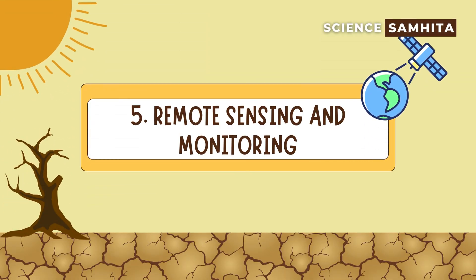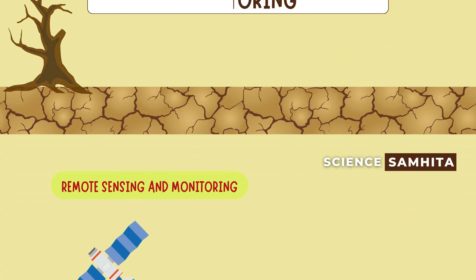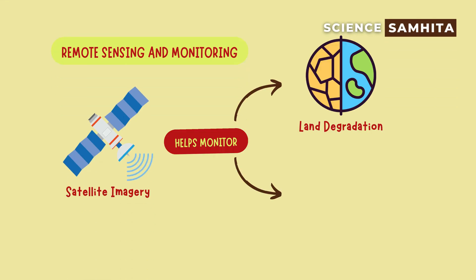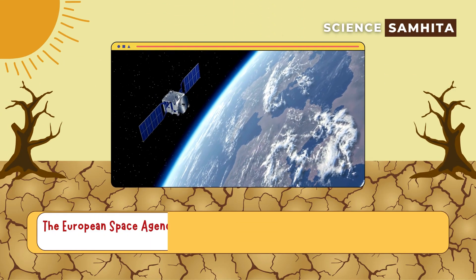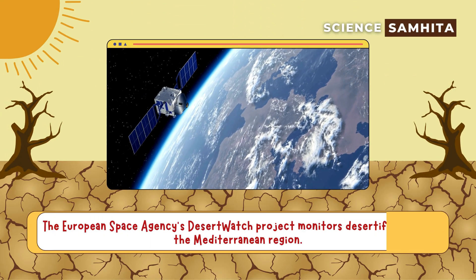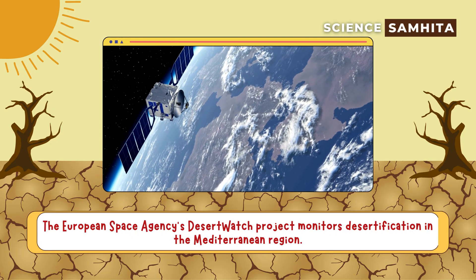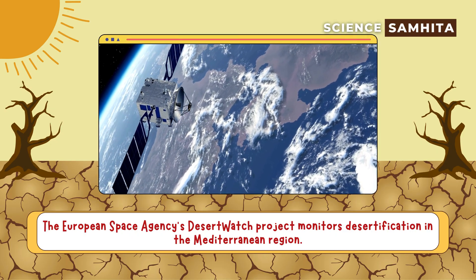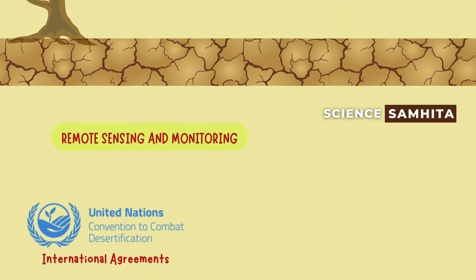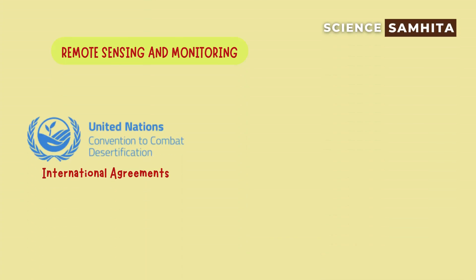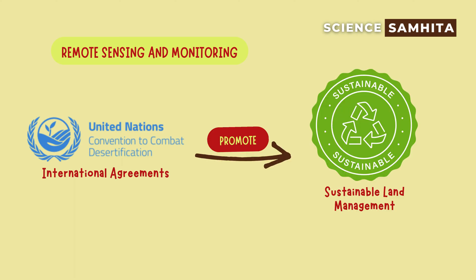Fifth, remote sensing and monitoring. Satellite imagery helps monitor land degradation and restoration efforts. For example, the European Space Agency's Desert Watch project monitors desertification in the Mediterranean region. Sixth, international agreements. Global cooperation is essential, and international agreements like the UNCCD promote sustainable land management globally.